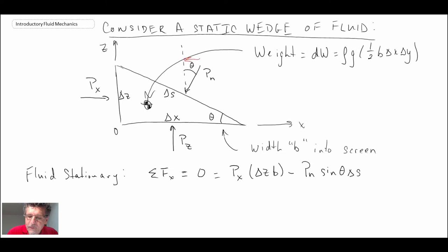And so using trigonometry, we know that PN sine theta would give us the component in the X direction multiplied by the size of the surface, which is delta S times B. And then similarly, forces in the Z direction.